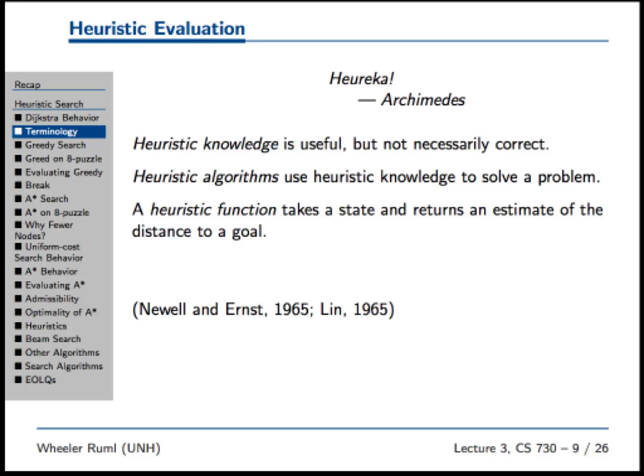A heuristic function in AI is a very particular thing. It takes a state and returns an estimate of the cost to go from that state to a goal. It's actually technically speaking a lower bound on the cost to a goal — guaranteed to be the correct cost or lower. It's guaranteed not to be overestimating, so it's optimistic. Like: you're going to need only five more steps to the goal. It's a really old concept — people came up with this in the 60s, and it's still very valuable.